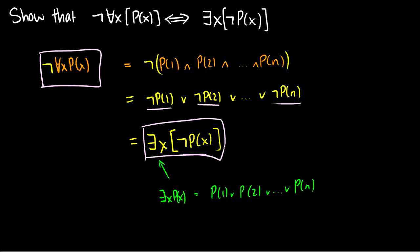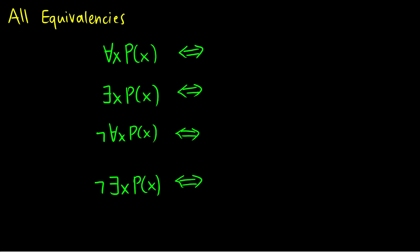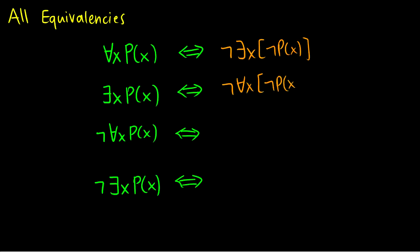There are four equivalencies. We just did one. '∀x Px' is the same as '¬∃x ¬Px'. '∃x Px' is the same as '¬∀x ¬Px'. '¬∀x Px' is the same as '∃x ¬Px' — we just showed this one. And '¬∃x Px' is the same as '∀x ¬Px'. I encourage you to verify the rest using the definitions.